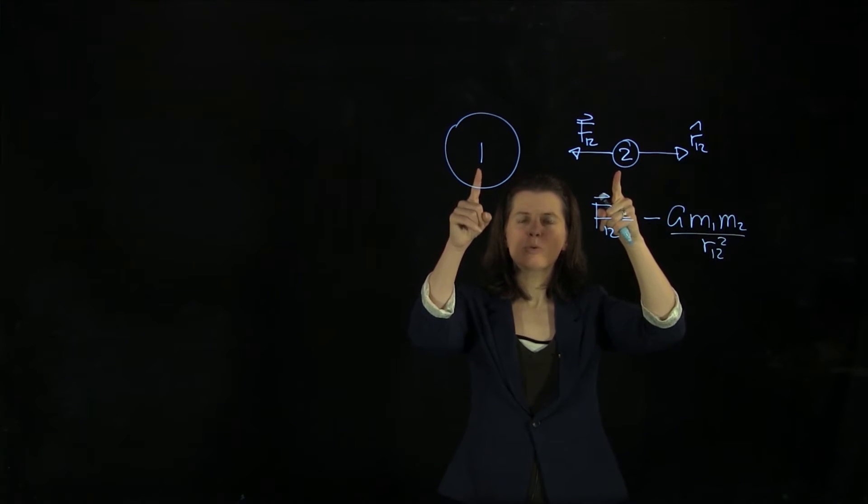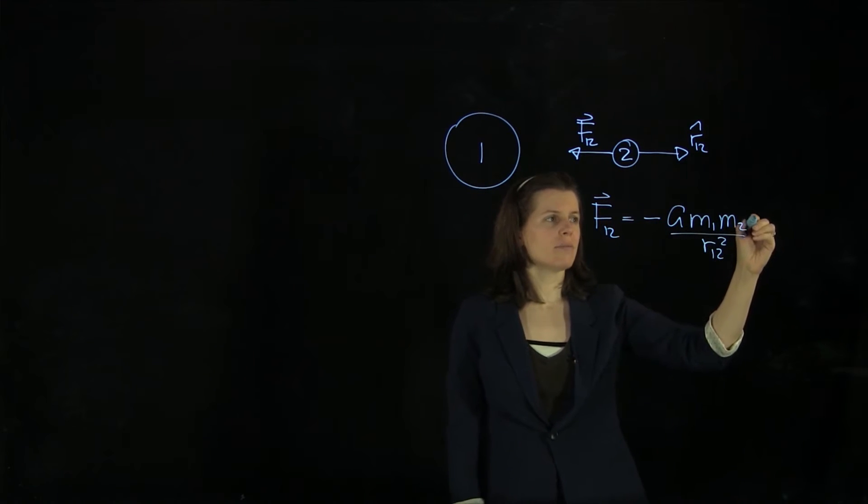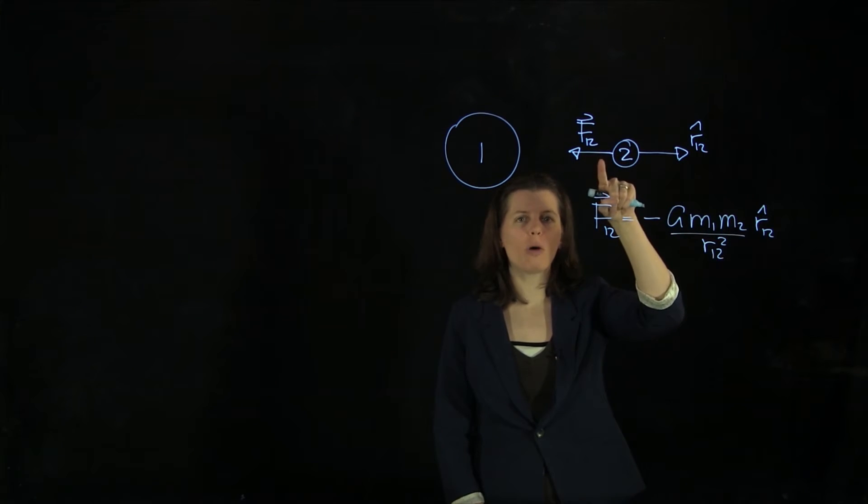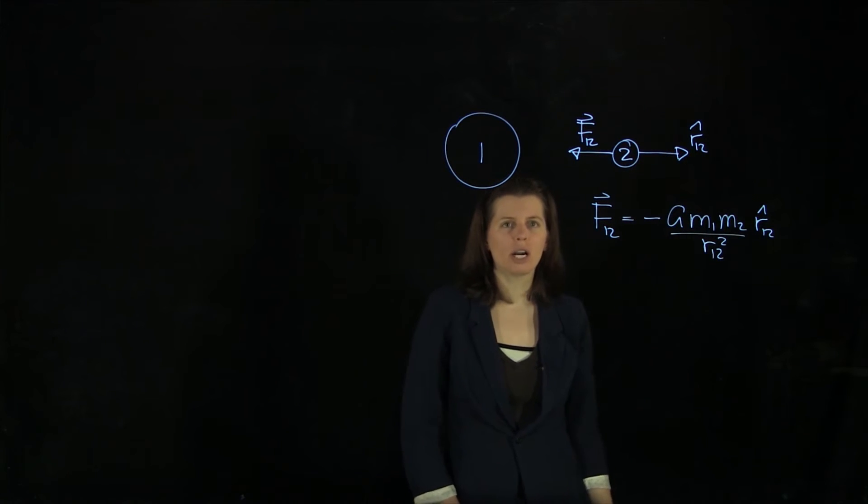That one is the distance between the two objects, times r₁,₂ hat. And the minus goes actually with the unit vector here, because the force goes in the opposite direction from our r-hat.